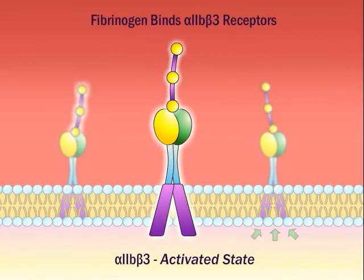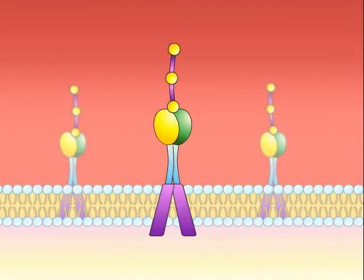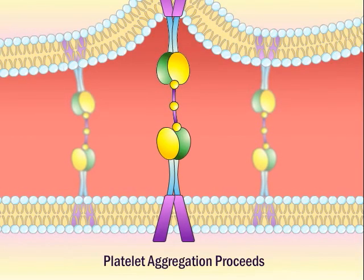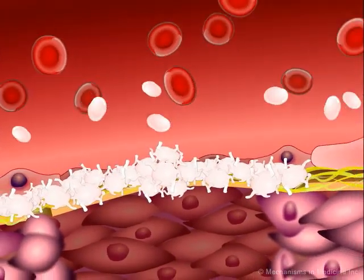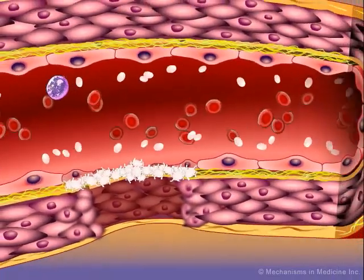Divalent fibrinogen and multivalent von Willebrand factor function as bridges between alpha-2b-beta-3 receptors on adjacent activated platelets, thus allowing platelet aggregation to proceed. In this way, the large and complex metabolic repertoire of platelets allows them to effectively perform their primary physiological role, that of supporting hemostasis upon tissue trauma to form a platelet plug that arrests blood loss from a vascular injury.